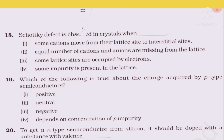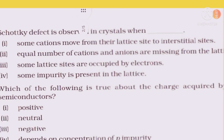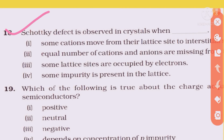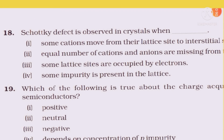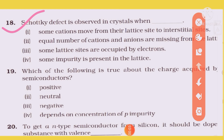Question 18: Schottky defect is observed in which crystal? To clarify: in Frenkel defect, the cation moves from its lattice site to an interstitial site. Schottky defect is different — it involves vacancy defects where both cation and anion are missing.